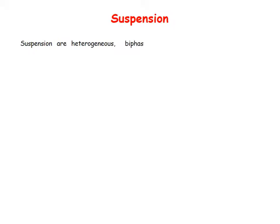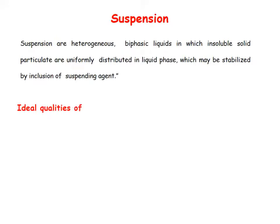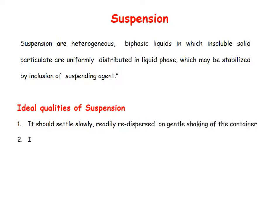Aluminium Hydroxide Gel is a suspension. Suspensions are heterogeneous, biphasic liquids in which insoluble solid particulates are uniformly distributed in a liquid phase, which may be stabilized by inclusion of suspending agents. Ideal qualities of suspension: it should settle slowly and redisperse easily.